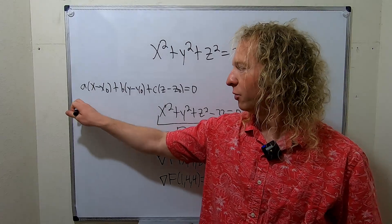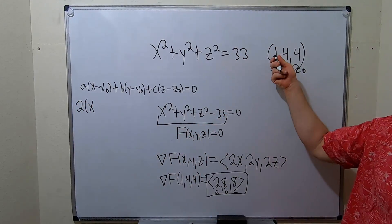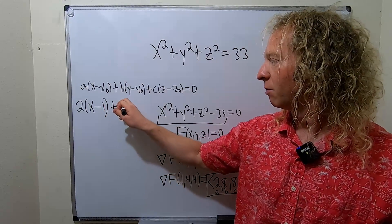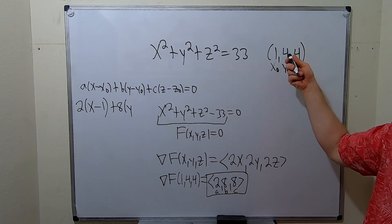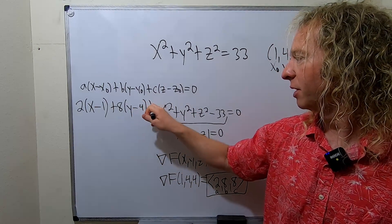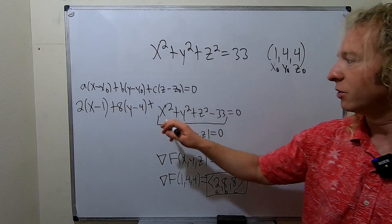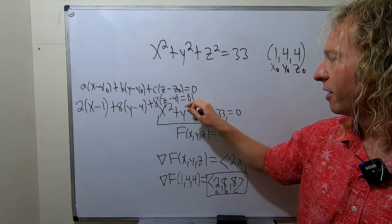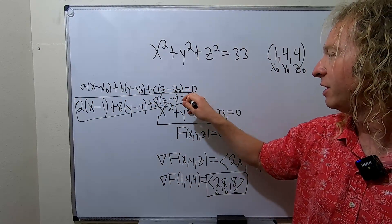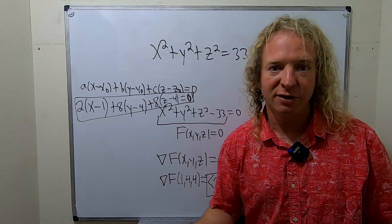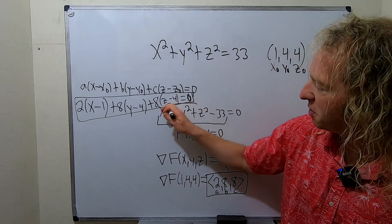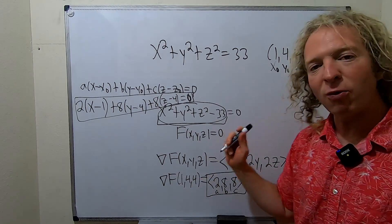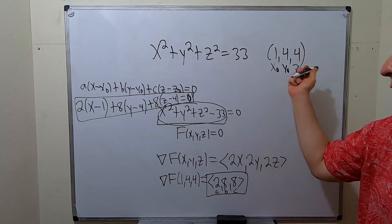Now all we do is plug everything into the formula. A is 2, so we get 2(x - 1) + 8(y - 4) + 8(z - 4) = 0. This is the equation of the tangent plane to the sphere. To summarize: set equal to zero, call it big F, find the gradient — that's always the normal vector — and plug in the numbers to get A, B, C every single time.